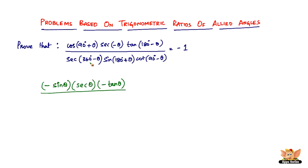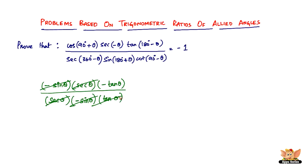sec(360° − θ): 360° − θ is in the fourth quadrant where cosine and secant are positive, and 360° doesn't change anything, so it stays sec θ. sin(180° + θ): third quadrant, sine is negative, 180° doesn't change the ratio, so it's −sin θ. cot(90° − θ): first quadrant, everything positive, but 90° changes cot to tan, so it becomes tan θ. Now −sin θ and −sin θ cancel, sec θ and sec θ cancel, tan θ and tan θ cancel, leaving just −1. Proved!